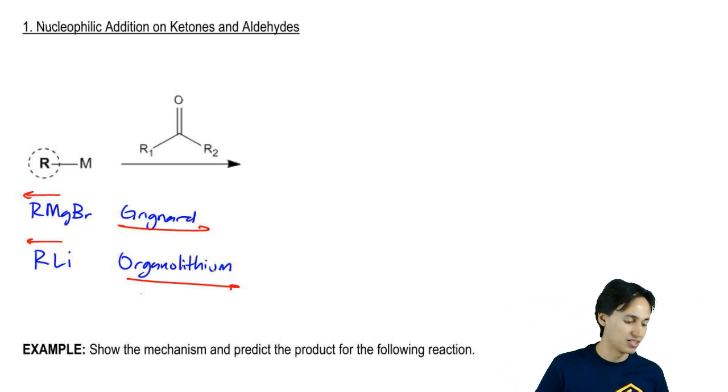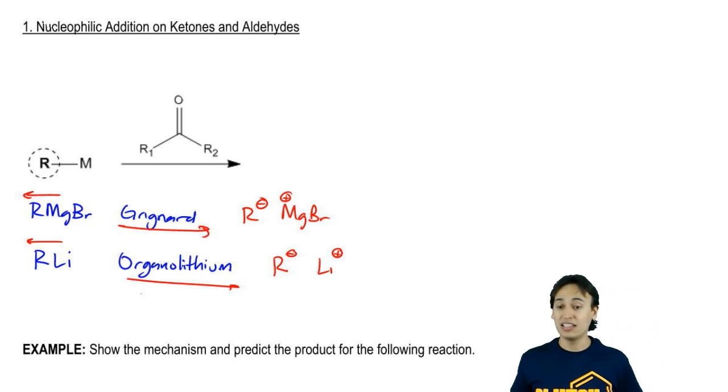that we can write these things ionized. We can actually write it as R negative, MgBr positive. And the same thing for organolithium. We could write it as R negative, Li positive. That being said, these are just both a source of R negative.